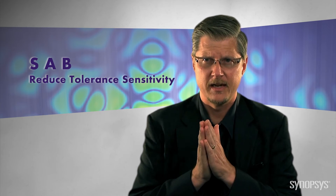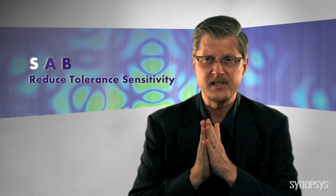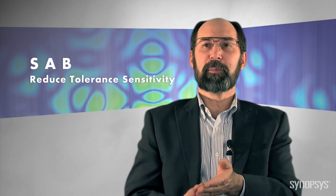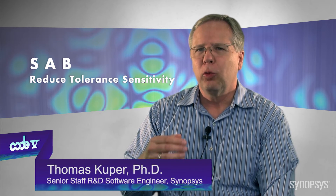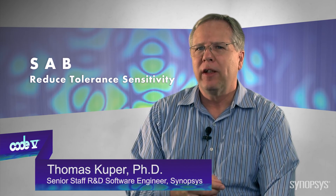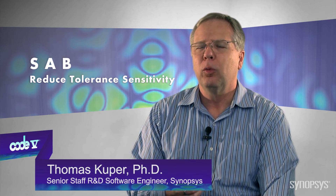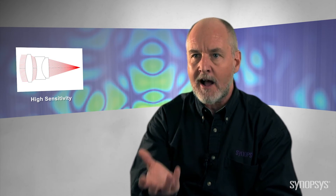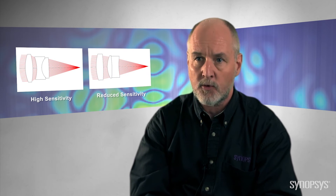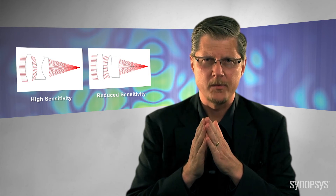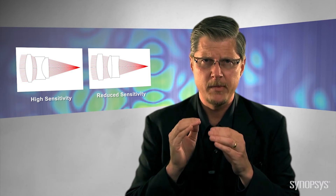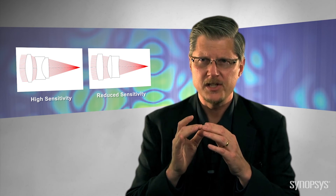Synopsys has implemented SAB, or Simplified As-Built Performance. It allows a user to directly optimize against the as-built performance of the lens with respect to a set of tolerances that they can define, so that you can now directly optimize for tolerance-insensitive design forms. That allows you to include tolerancing parameters from the differential ray-based code into the optimization sequence.